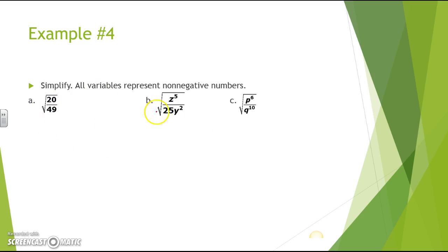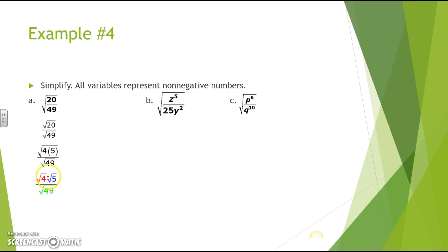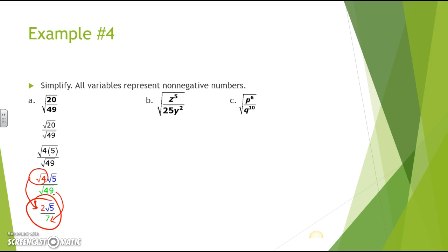Example 4, part a: simplify the square root of 20 over 49. Using the quotient property, we take the square root of 20 over the square root of 49. Since 20 equals 4 times 5, we have the square root of 4 times 5 over the square root of 49. The square root of 4 is 2, and the square root of 5 gives a decimal so we leave it under the radical. The square root of 49 is 7. So the final answer is 2 times the square root of 5 over 7.